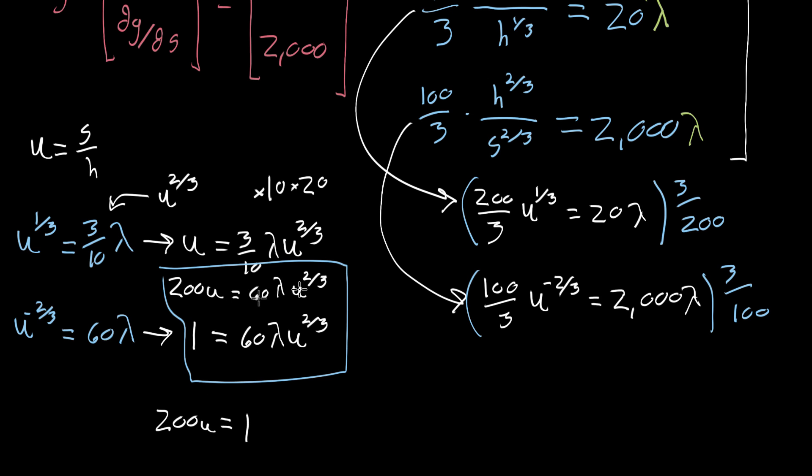And now 200 times U, well, that's S divided by H. So this is the same thing as saying 200 times S over H equals one, which we can write more succinctly as H is equal to 200 times S. Great. So I'm gonna go ahead and circle that. H is equal to 200 times S.